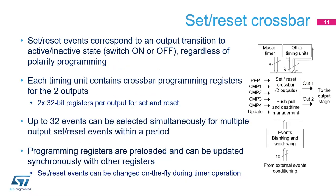The crossbar combines the set and reset events to build the output waveforms, regardless of polarity programming. The events may come from the timing unit itself, from other timing units, from the master timer, or from external events. The timing unit contains two crossbar programming registers per output — one defining the set events, the other for reset events — with up to 32 events selectable simultaneously. The programming registers are shadowed with preload registers so that waveforms can be modified on the fly without any risk of abnormal transient waveforms.